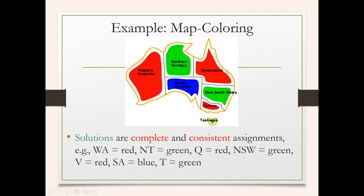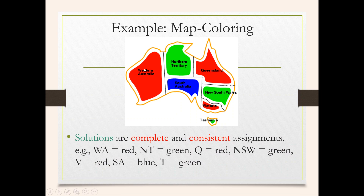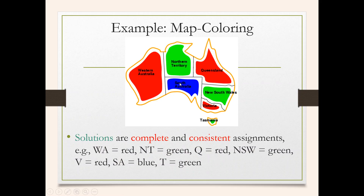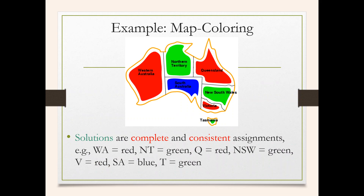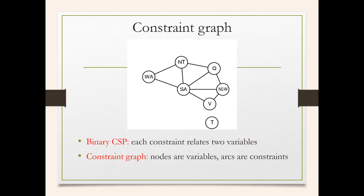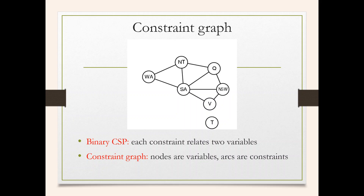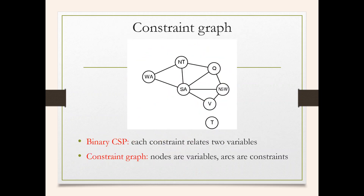The solutions are complete and consistent assignments. Now let's look at another graph representation of the map. WA is connected to NT and SA. NT and SA are both connected to each other. NT is connected to Q. SA is connected to Q. Q is connected to NT, SA, and NSW. SA is connected to NT, Q, WA, NSW, and V. T has no connection with any other region. This is the constraint graph representation of the map coloring problem.